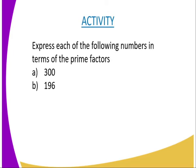Having said that, we are going to have the following activity where we are required to express each of the following numbers in terms of the prime factors. And the numbers are A, 300 and B, 196.